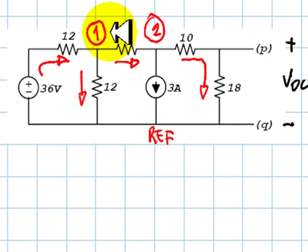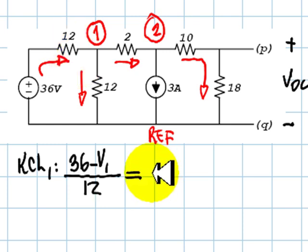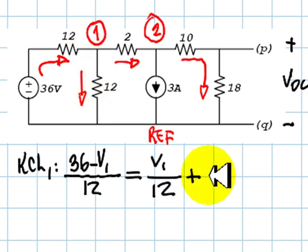One for this node and one for this other node. For node 1, KCL 1, currents that go in node 1, 36 minus V1 divided by 12. And that is equal to two currents, V1 divided by 12 plus this other current, V1 minus V2 divided by 2.